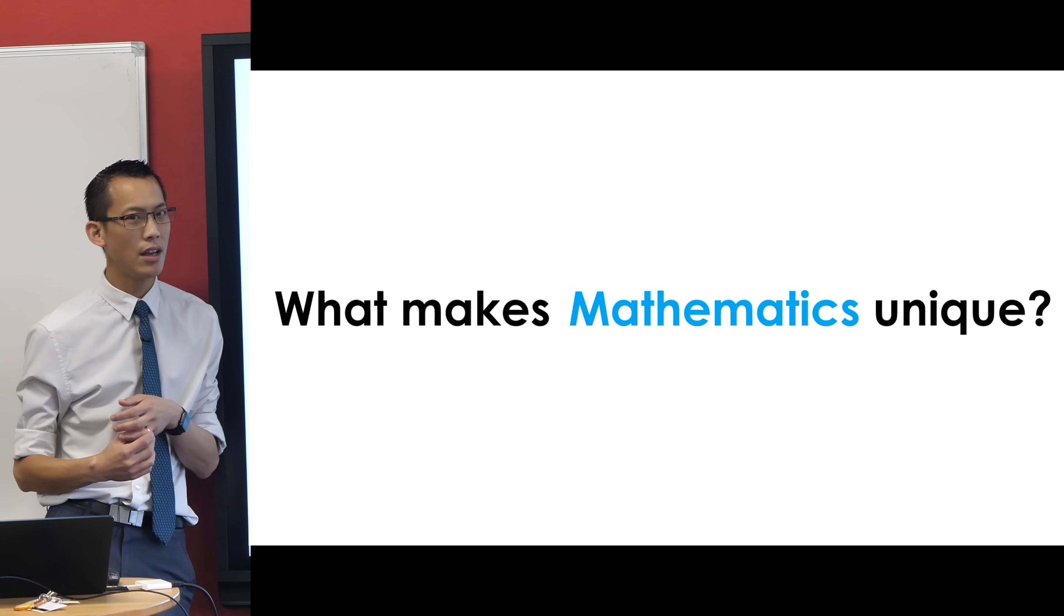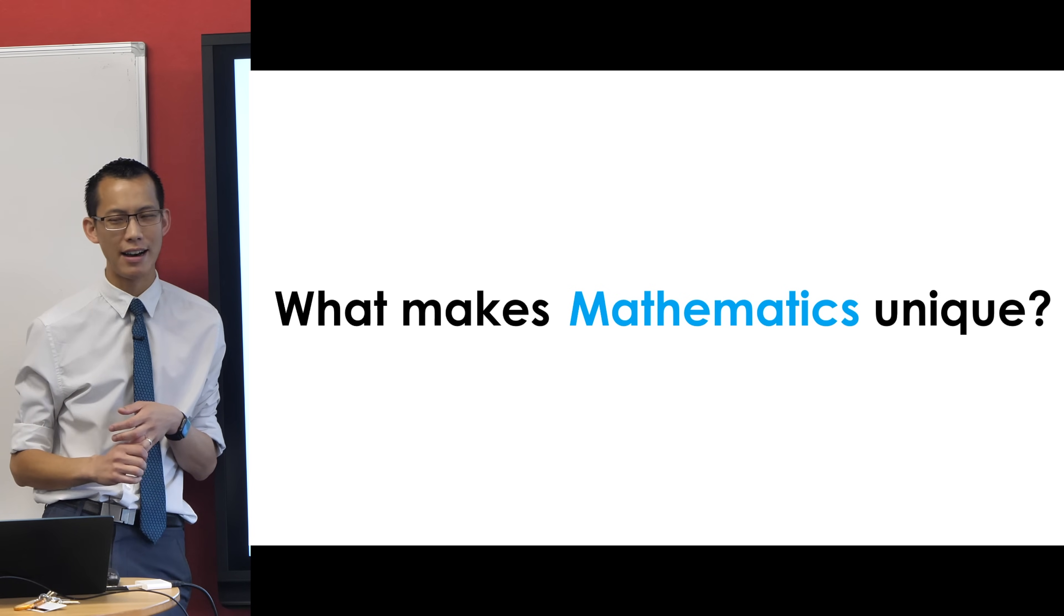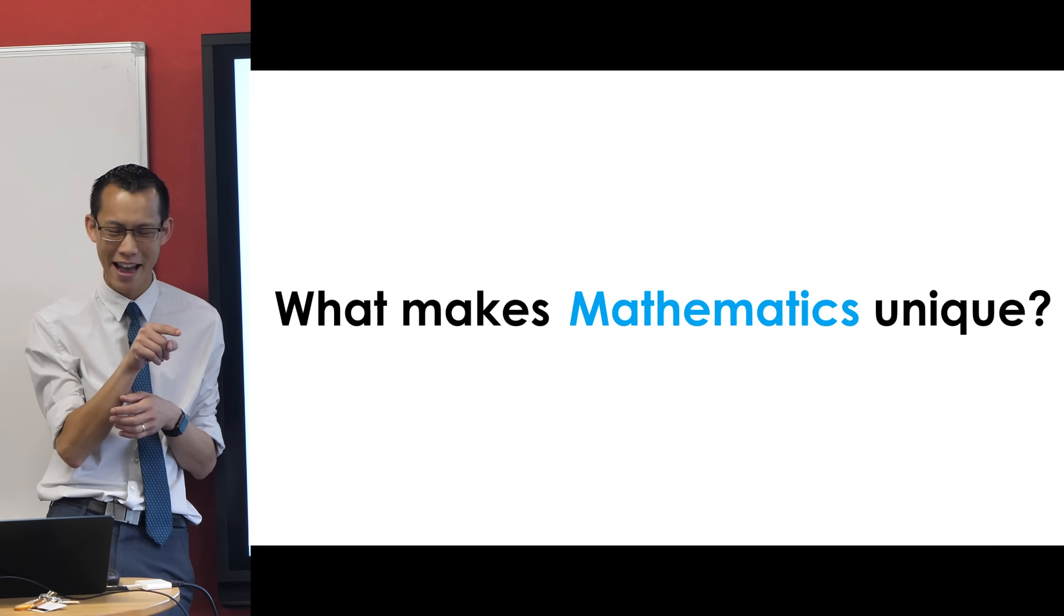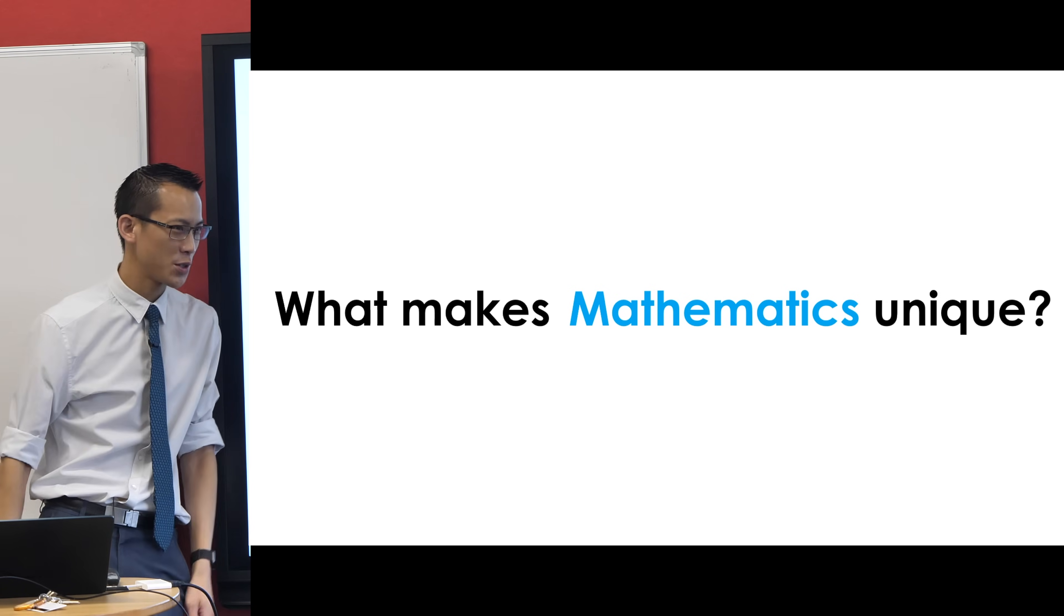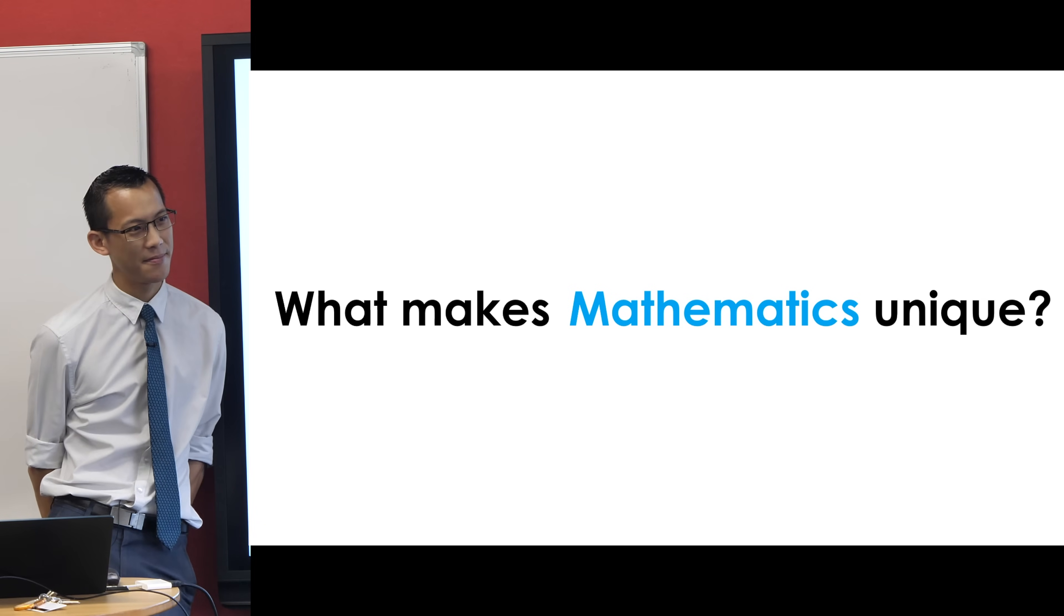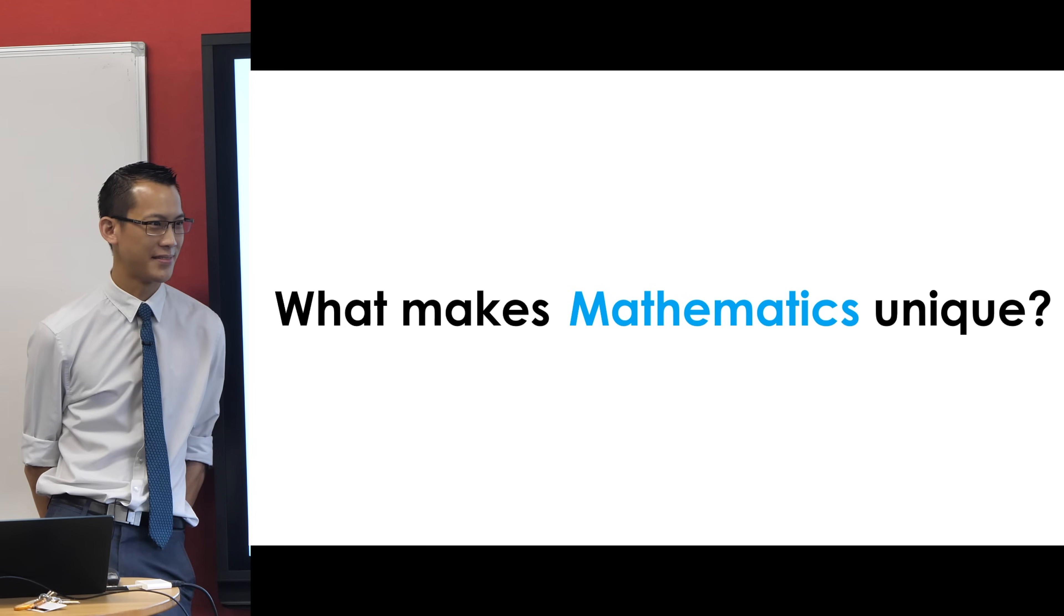It's universal. Can you unpack what you mean by mathematics is universal? Even if you're some different alien species, people send out binary and our counting system so that other species, if they exist, will know they can count too. So it's a thing that every species can do.